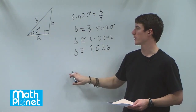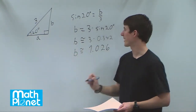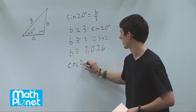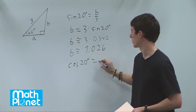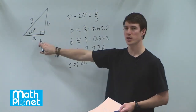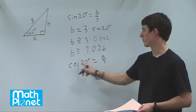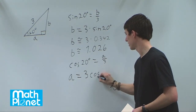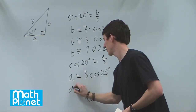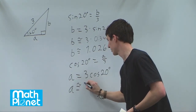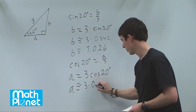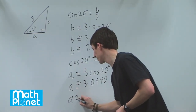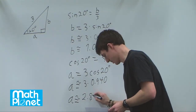We've solved for B. Now we do the same thing for A, but using the cosine function. Cosine of 20 degrees equals A over 3, which is adjacent over hypotenuse. Multiplying both sides by 3, we get A equals 3 times cosine of 20 degrees. That's approximately 3 times 0.940, so A is approximately 2.820.